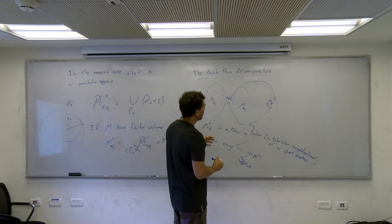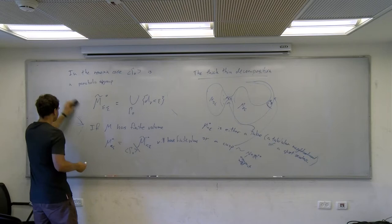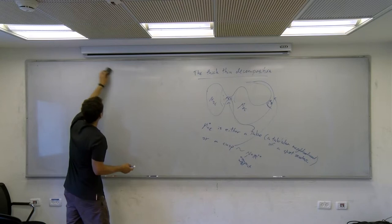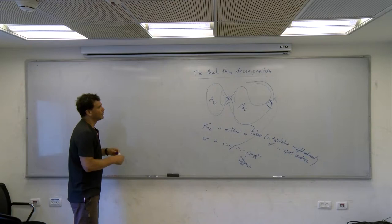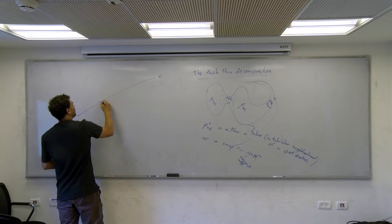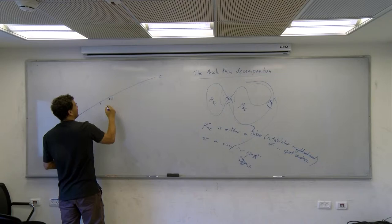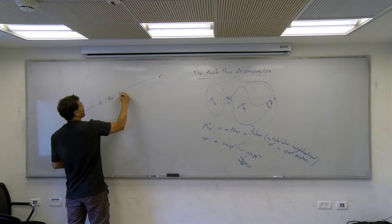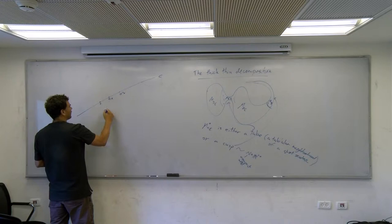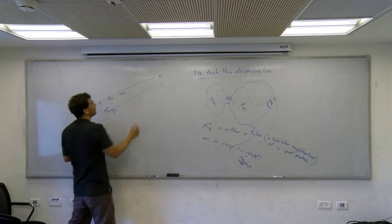Let's analyze the loxodromic (hyperbolic) case. We have an axis C and an element alpha or gamma generating a cyclic group along this geodesic, corresponding to this geodesic here. The set D_alpha less than epsilon will be some neighborhood of C.